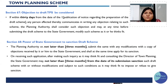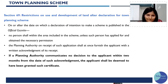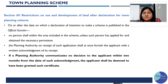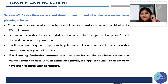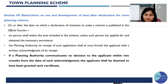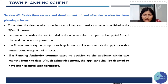The state government can also refuse sanctioning and ask for the scheme to be done properly. Section 69 deals with restriction on use and development of land after the declaration of a town planning scheme — after declaration, people are restricted from using or developing the land, and if they want to develop they need to take permission.